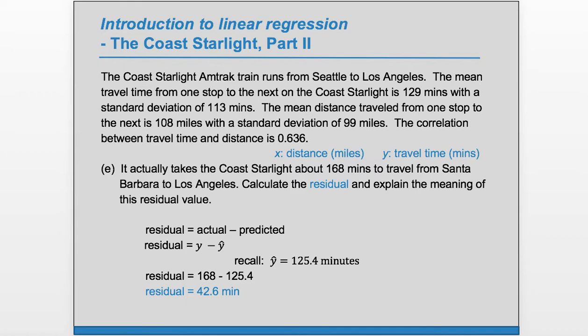And now how do we interpret this? This tells us the distance between the actual and the predicted. So this tells us that our prediction was 42.6 minutes too low.